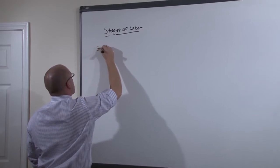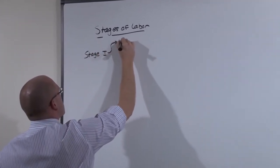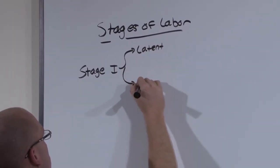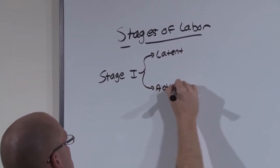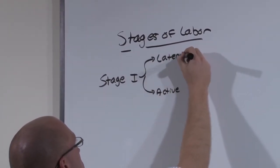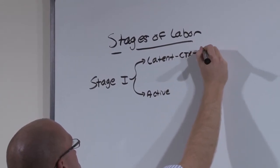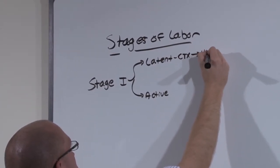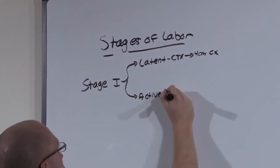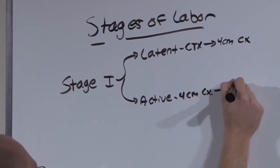Stage 1 is broken up into two parts, the latent phase and the active phase. The latent phase of stage 1 is from the beginning of contractions to when the cervix is 4 centimeters. Active phase is then from 4 centimeters of cervical dilation to maximal dilation at 10 centimeters.